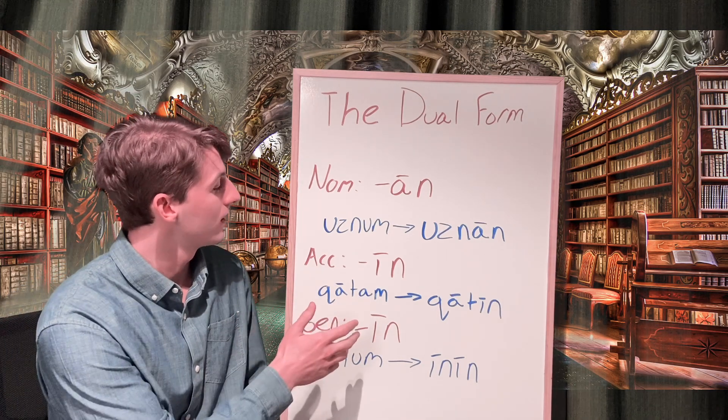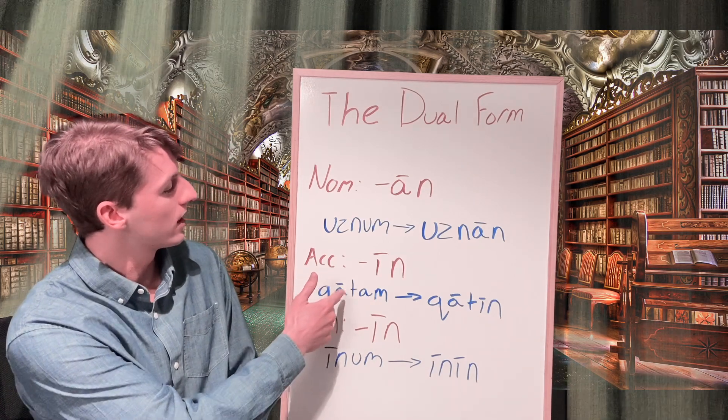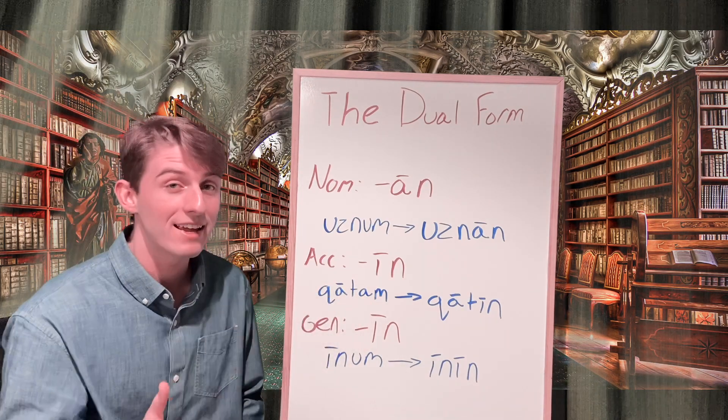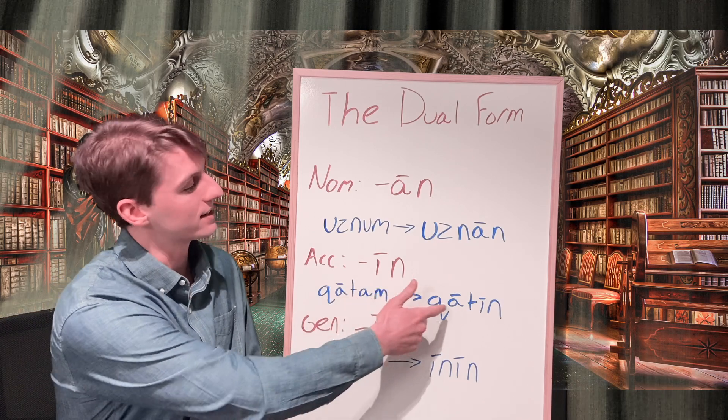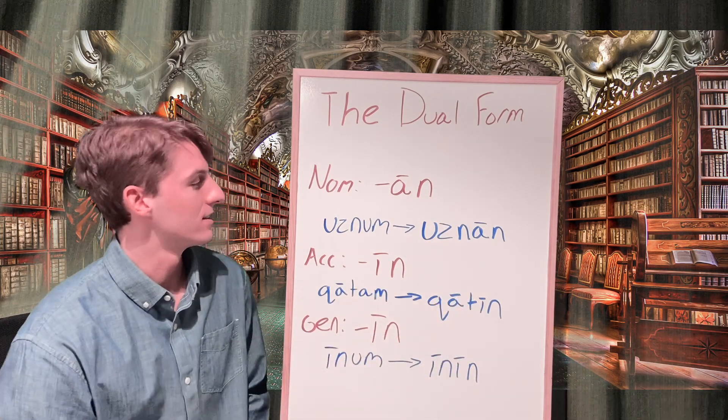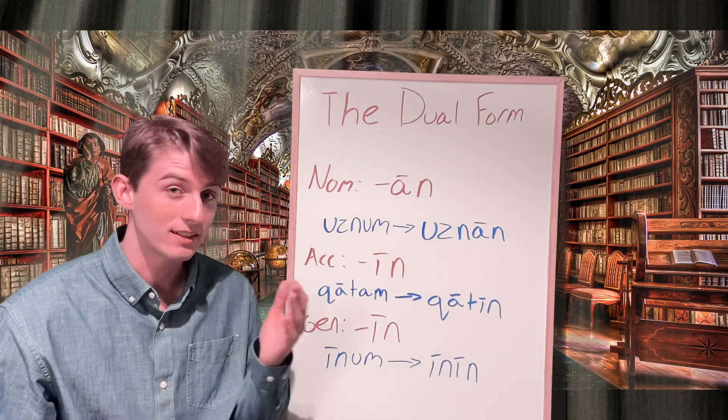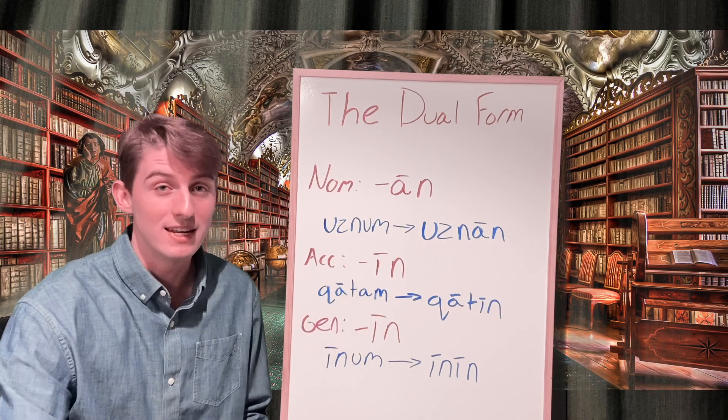If there's a feminine, like for example katam, which is a feminine for hand, this is going to look the exact same with the ending as a different word, like our last example berkum, which means knee and is a masculine.